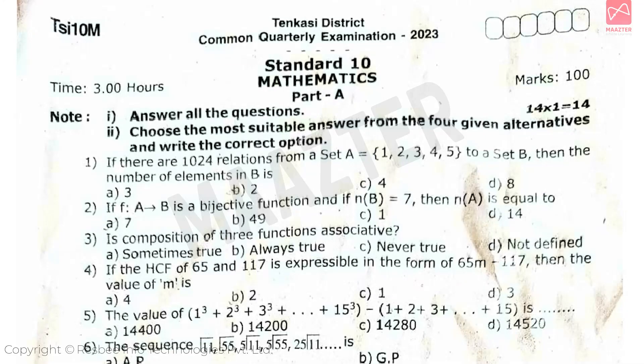First, Part A. Total of 14 one-mark questions are there. First question: if there are 1024 relations from a set A = {1, 2, 3, 4, 5} to a set B, then the number of elements in B is, answer is Option B. Next, if function f: A to B is a bijective function and if n(B) = 7, then n(A) is equal to, answer is Option A.